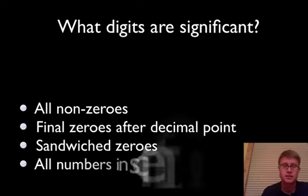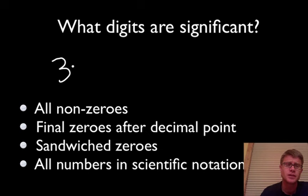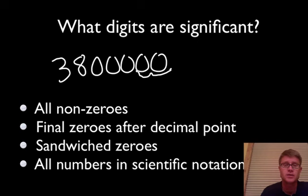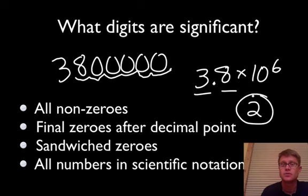All numbers in scientific notation are significant. Take the number 3,800,000 — in scientific notation we write this as 3.8 × 10⁶. Both the 3 and the 8 are significant, so this would have 2 significant digits.